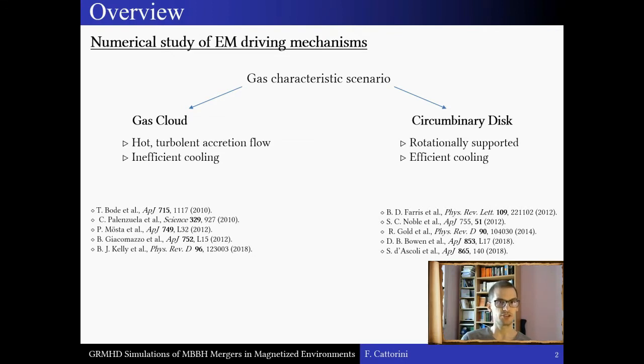The gas-cloud model, which is characterized by hot and turbulent accretion flow, and the circumbinary disk model, where the gas settles in a rotationally supported and geometrically thin accretion disk around the binary itself. Here, I show a small selection of references on both scenarios.